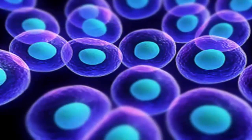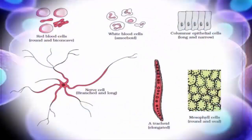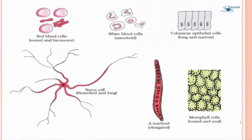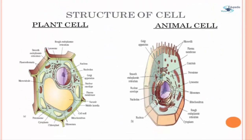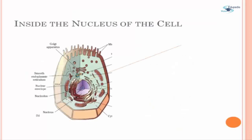Cells are of different shapes and sizes. They possess different functions — like red blood cells, white blood cells, epithelial cells, nerve cells, mesophyll cells, and many more. Although all these cells have different forms, every cell has the same basic parts: a membrane, within which resides the cytoplasm and nucleus.